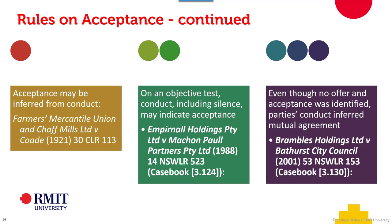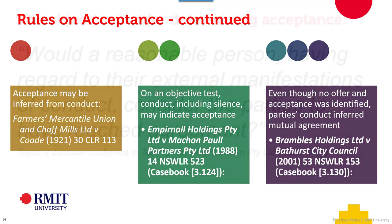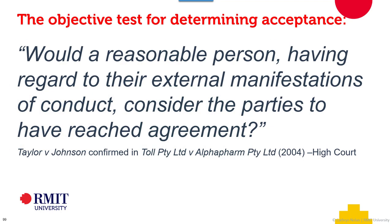Taylor v Johnson again: would a reasonable person, having regard to the external manifestations of conduct, consider the parties to have reached agreement? That ultimately is the nub of what we're looking at when it comes to acceptance. Was that conduct sufficient to germinate that egg of deal DNA?